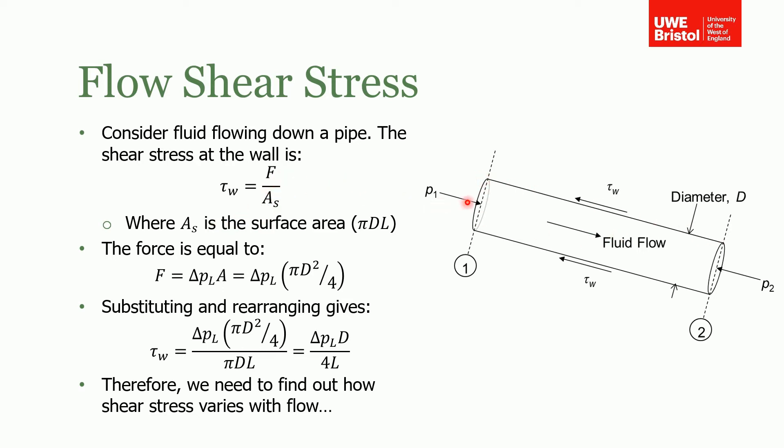The force required to overcome that shear stress is due to the change in pressure between the inlet and outlet of the pipe. The force is that change in pressure times by the area—notice that the area in this instance is the cross-sectional area of the pipe. So the force is the change in pressure times pi*D²/4.